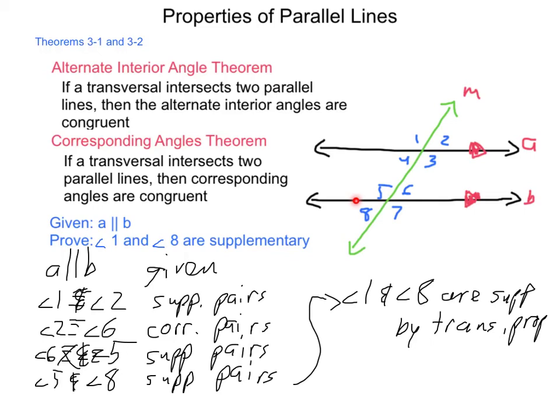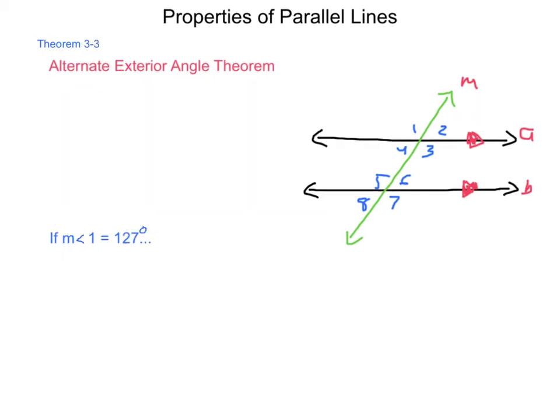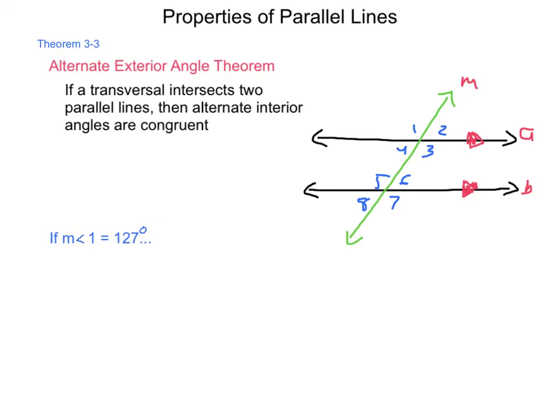Now that we've looked at those, we have one more theorem — Theorem 3.3, the alternate exterior angle theorem. This states that if a transversal intersects two parallel lines, then the alternate exterior angles are congruent. Let's see what we can find out from this.